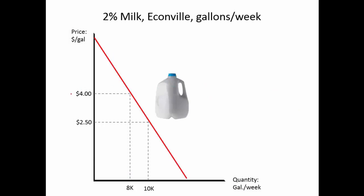Now let's think about the opposite case where price decreases — it goes from $4.00 to $2.50, and then the quantity goes up from 8,000 to 10,000 gallons per week. What happened to demand as the price decreased? Nothing happened to demand. The demand curve is still there, D1. What changed is the quantity, which went from 8,000 to 10,000. We went from point A to point B on this demand curve.